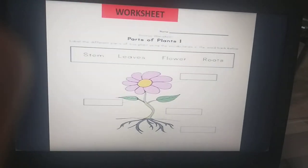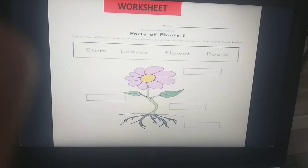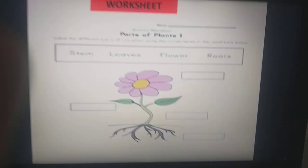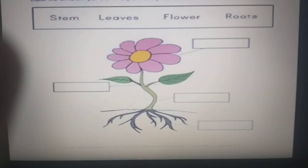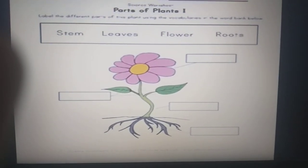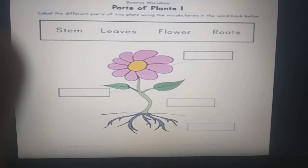Now this is a time for assignment. You have to draw a plant in your EVS notebook and label its parts. Look at this plant. You have to draw this plant and label its parts like stem, leaves, flower, roots. Okay?